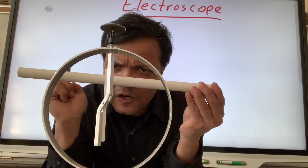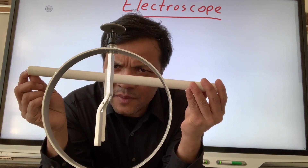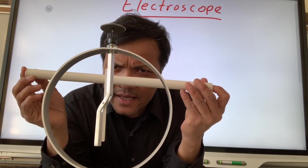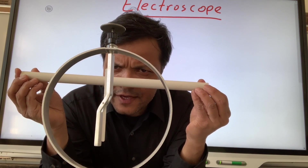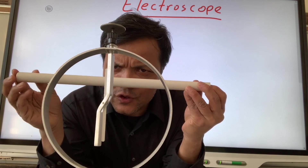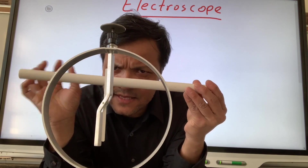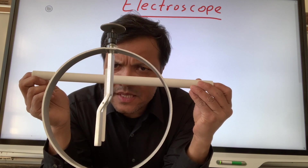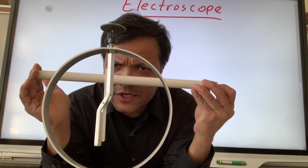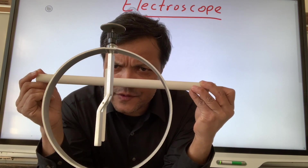That means there would not be any flow of electrons. Electrons will be at rest, so you can accumulate electrons on an insulator like a PVC pipe. The PVC pipe goes from neutrally charged to negatively charged.